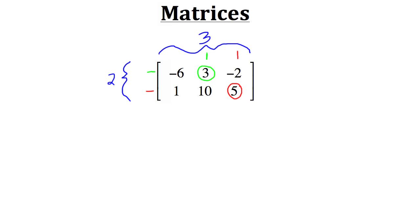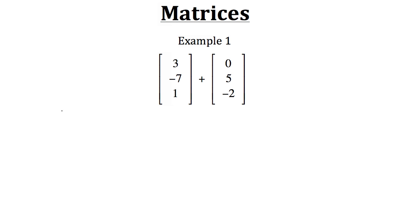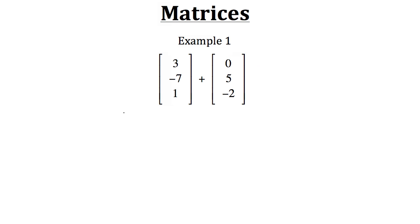Let's start off with addition. Here in example one, we have two matrices being added together. An important concept to remember when adding matrices is that they have to have the exact same dimensions. With our first matrix, it has three rows and one column. That means our second matrix also has to have three rows and one column, which it does. Because the two matrices have the same dimensions, the resulting matrix will also have three rows and one column.